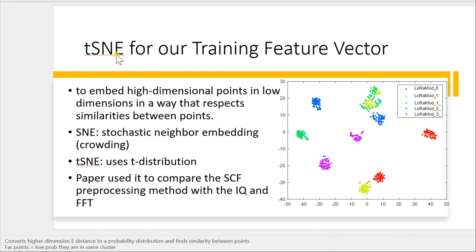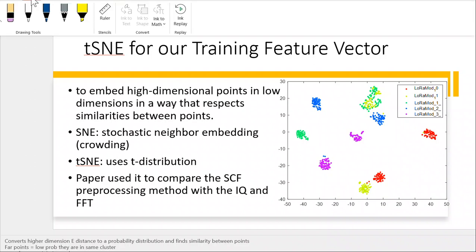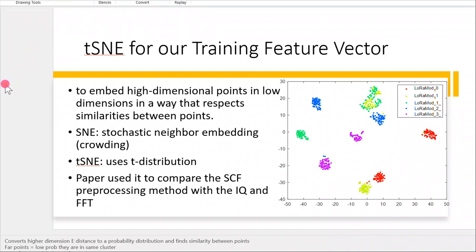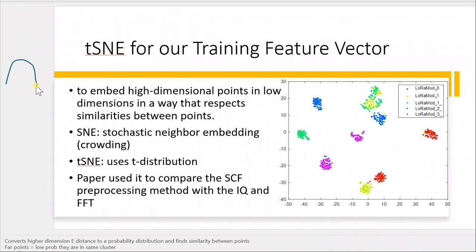I think it has another name — the Gaussian. So first, before t-SNE, there was SNE — Stochastic Neighbor Embedding. The problem with the original SNE was that it used the normal distribution.